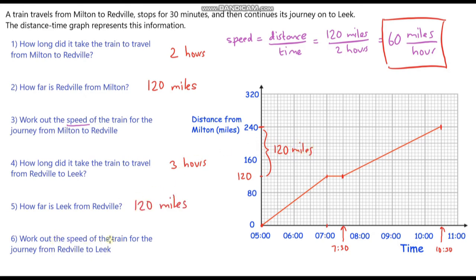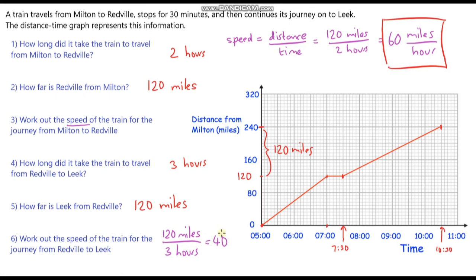The last question: work out the speed of the train for the journey from Redville to Leek. The distance from Redville to Leek is 120 miles and the time taken is 3 hours. Speed equals distance divided by time, so it's 120 miles divided by 3 hours. 120 divided by 3 is 40, and the units are miles per hour.